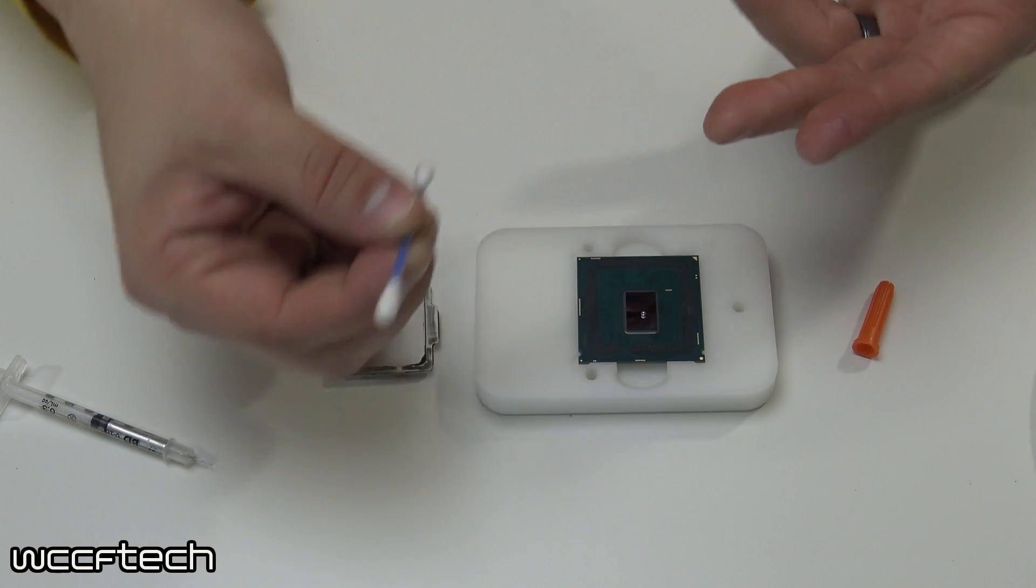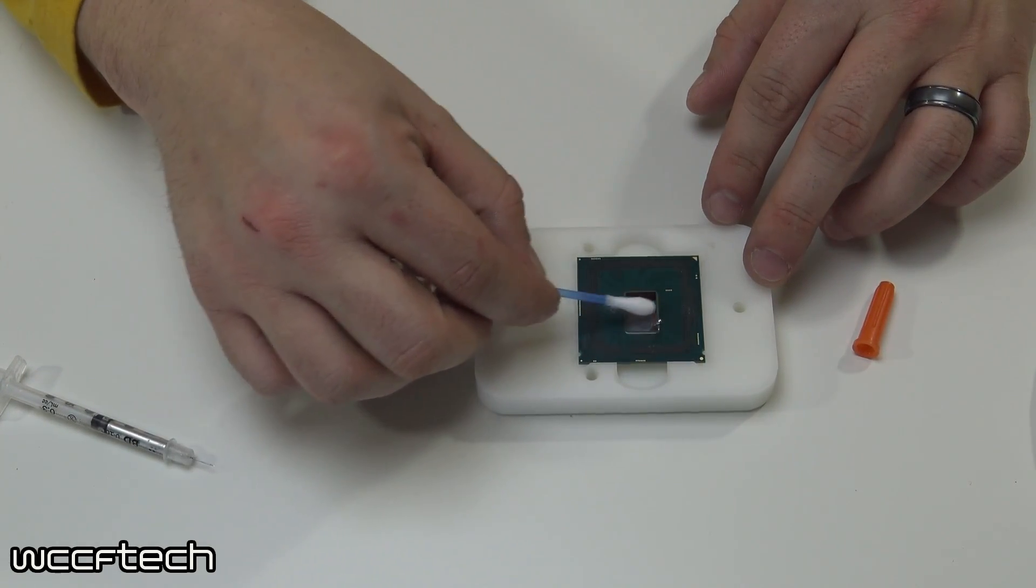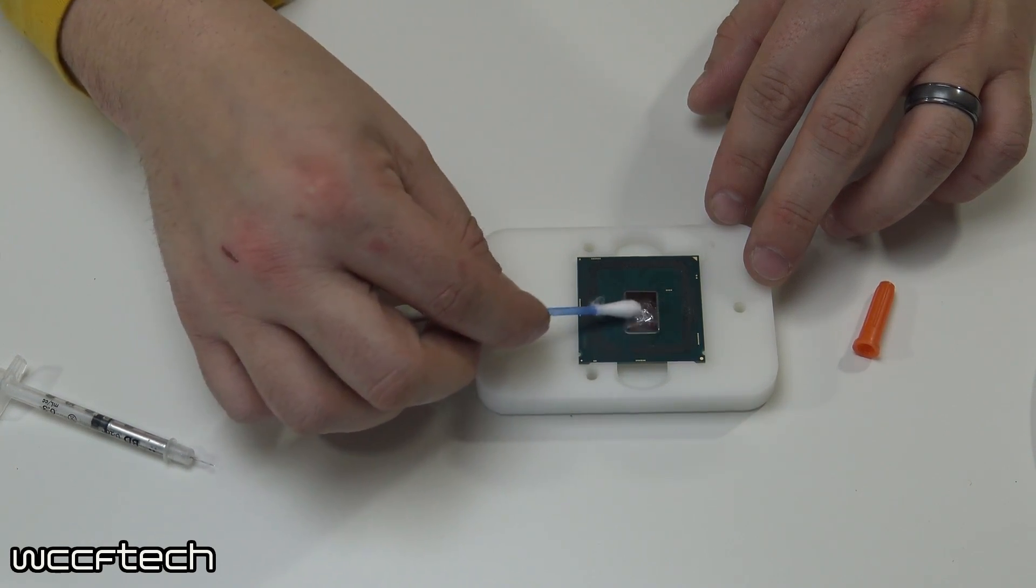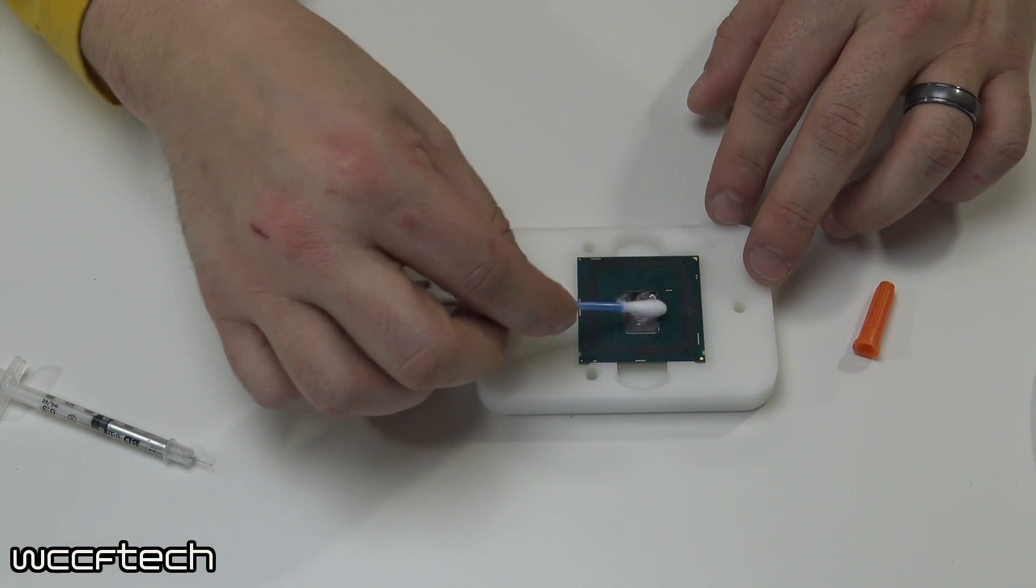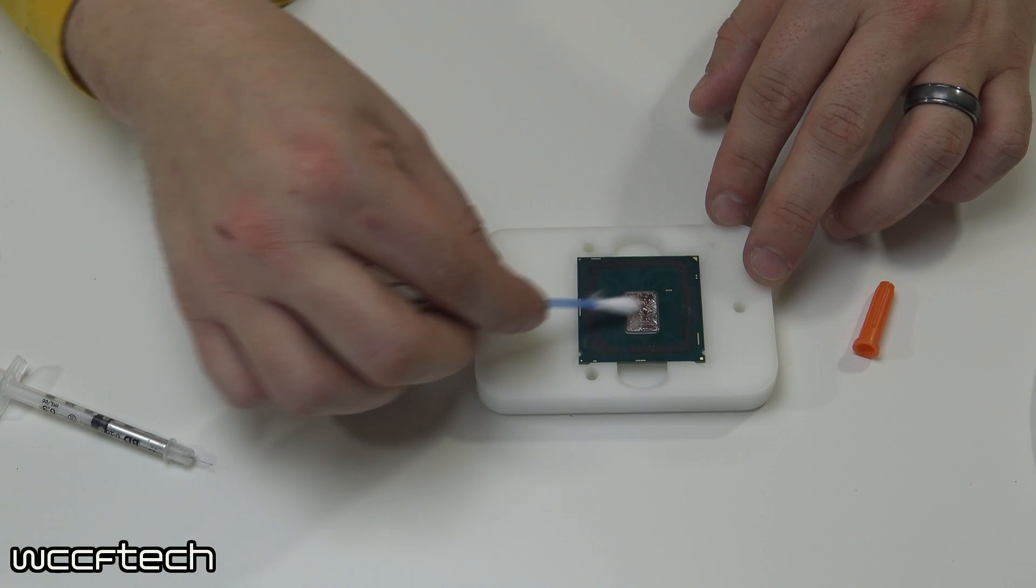So what we do is take our Q-tip because the Q-tip isn't going to absorb it. So you take it and then you make sure you keep it on the die and then you spread it around the entire die. Make sure you get full coverage on it.